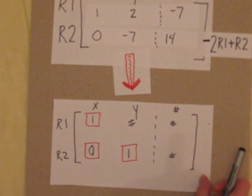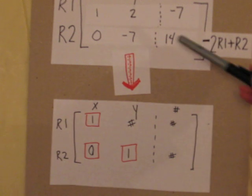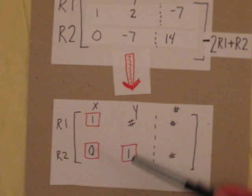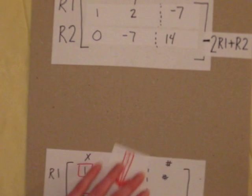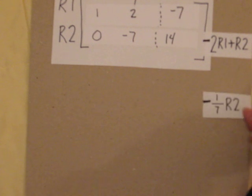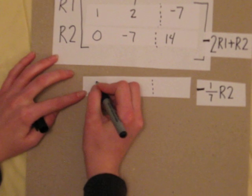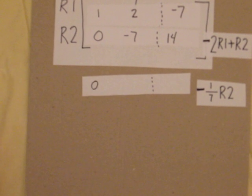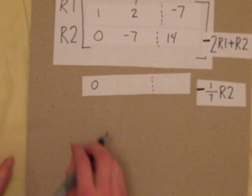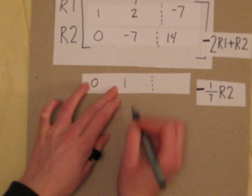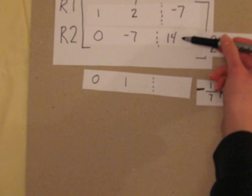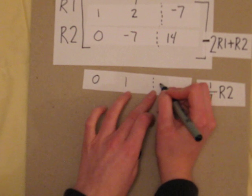We're not quite where we want to be yet. We need to get our negative 7 to be 1. We can do that by multiplying the second row by negative 1/7. So that gives us 0 times negative 1/7 is 0. Negative 7 times negative 1/7 is 1. 14 times negative 1/7 gives us negative 2.